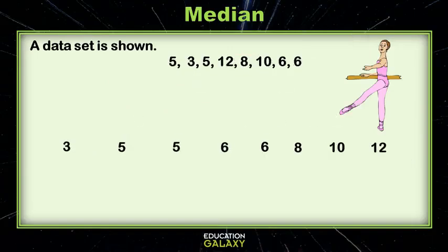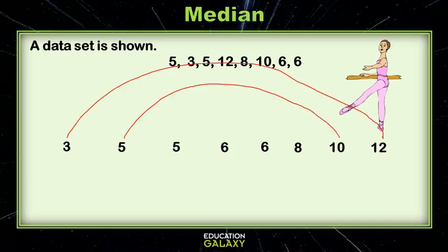So let's first arrange them in order. Now let's see where the middle is by connecting the outsides. Here are our two middle numbers, six and six. So we need to average six and six. So let's do six plus six, which gives us twelve. And then we want to divide by two, because we have two numbers. And twelve divided by two is six. So the median here is six.